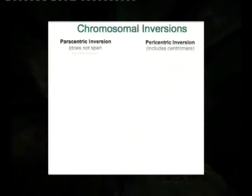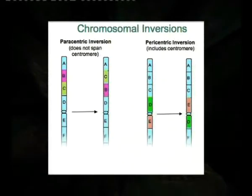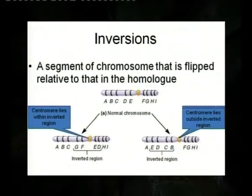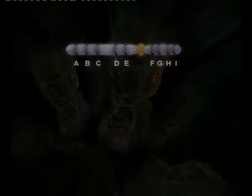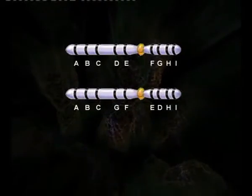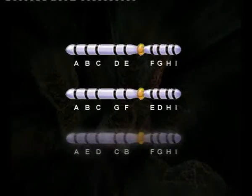In short, both paracentric as well as pericentric inversions have serious consequences with respect to their meiotic behavior as well as their breeding behavior. For example, consider a chromosome with the order of genes a b c d e f g h i, where the centromere is present between e and f. In the case of pericentric inversion, the segment d e f g — which contains the centromere between e and f — undergoes breakage and reunion in an inverse manner, producing the gene order a b c g f e d h i.